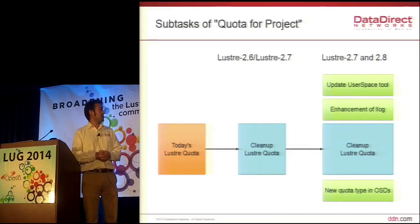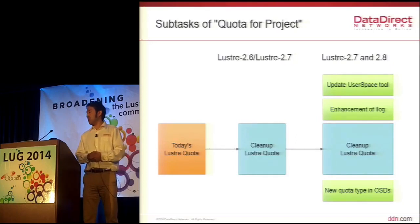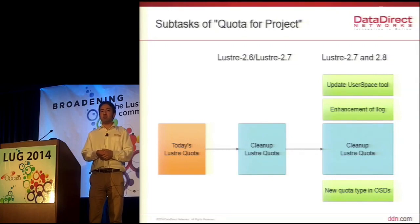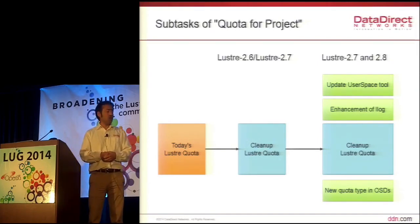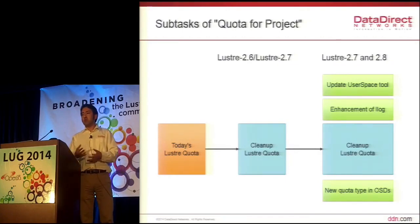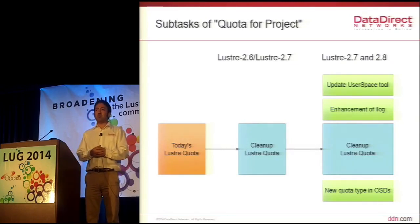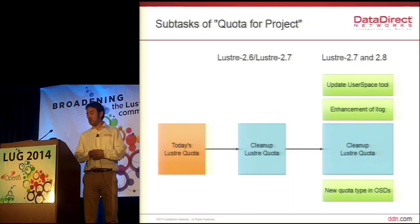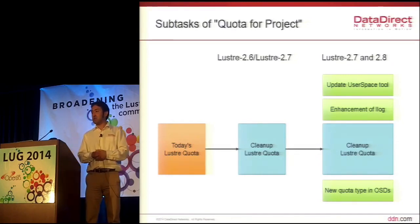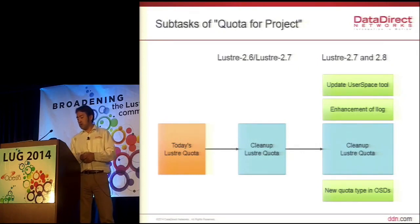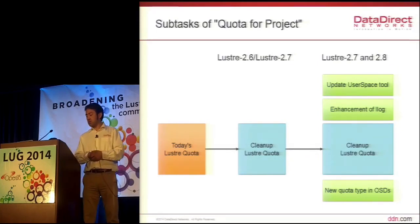There are a couple of subtasks we are working on. Today's Lustre quota code has been cleaned up — removing hard-coded user and group quota assumptions to make it more extensible. This is not new functionality, but it's really important for adding the new quota type in the future. Once this cleanup is done, additional quota accounting is needed in the OSD layer — both ZFS and LDSKFS — plus enhancements to the Lustre log to keep the additional project ID, and updates to the user space utility.